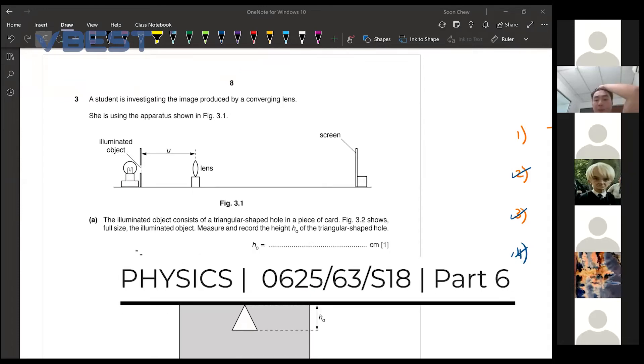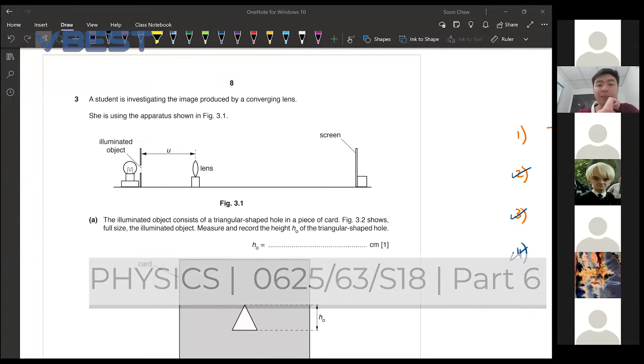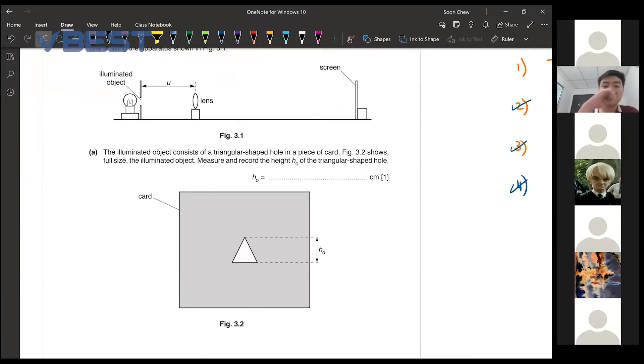Question number 3. A student is investigating the image produced by a converging lens. She is using the apparatus shown in the figure. The illuminated object consists of a triangular shape hole in a piece of card.